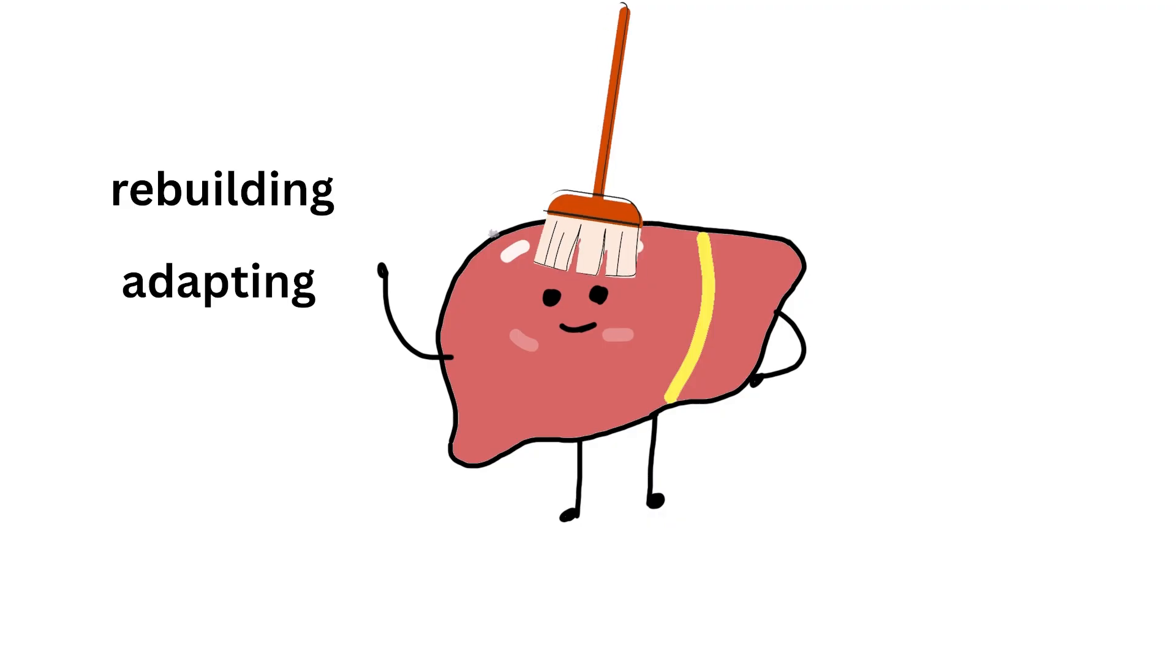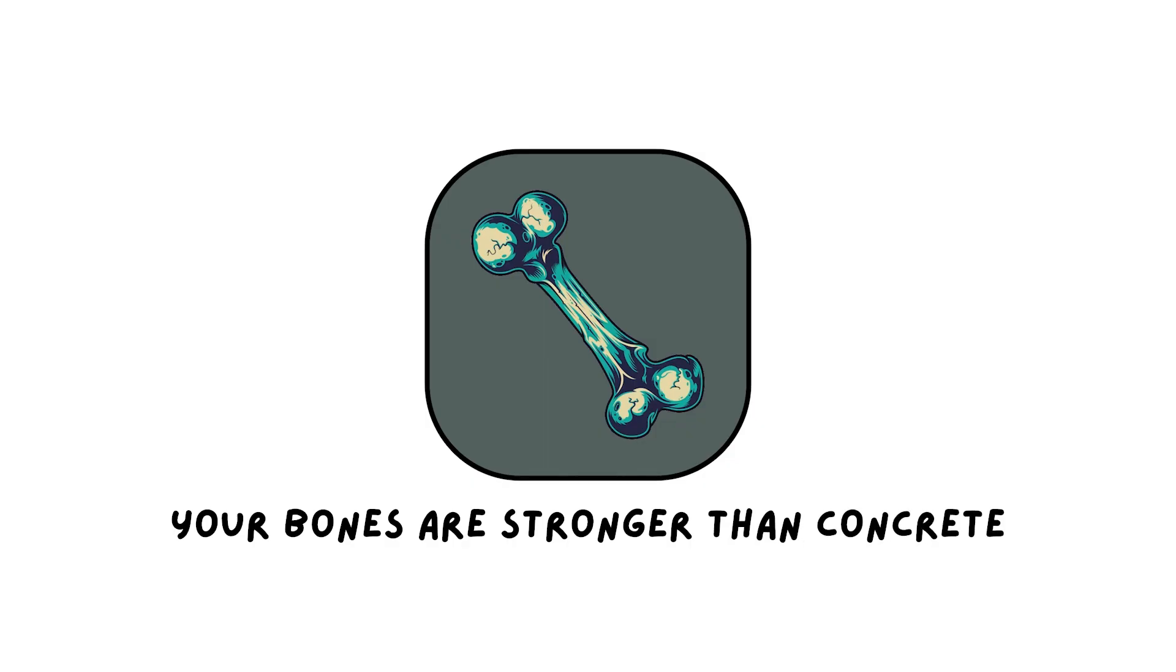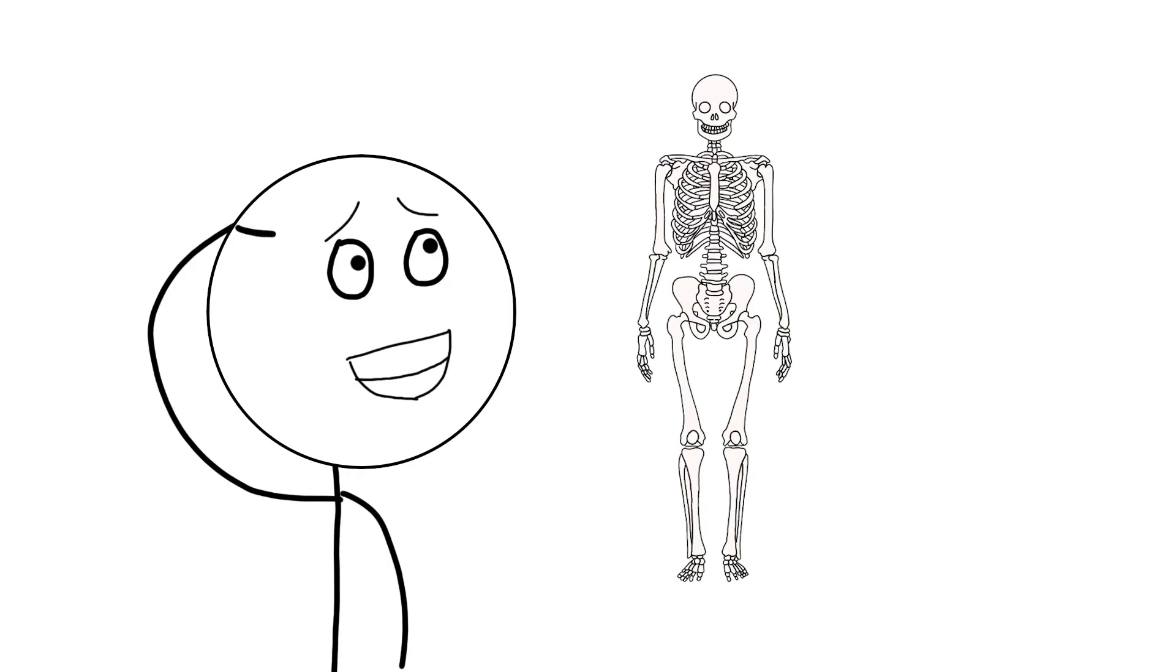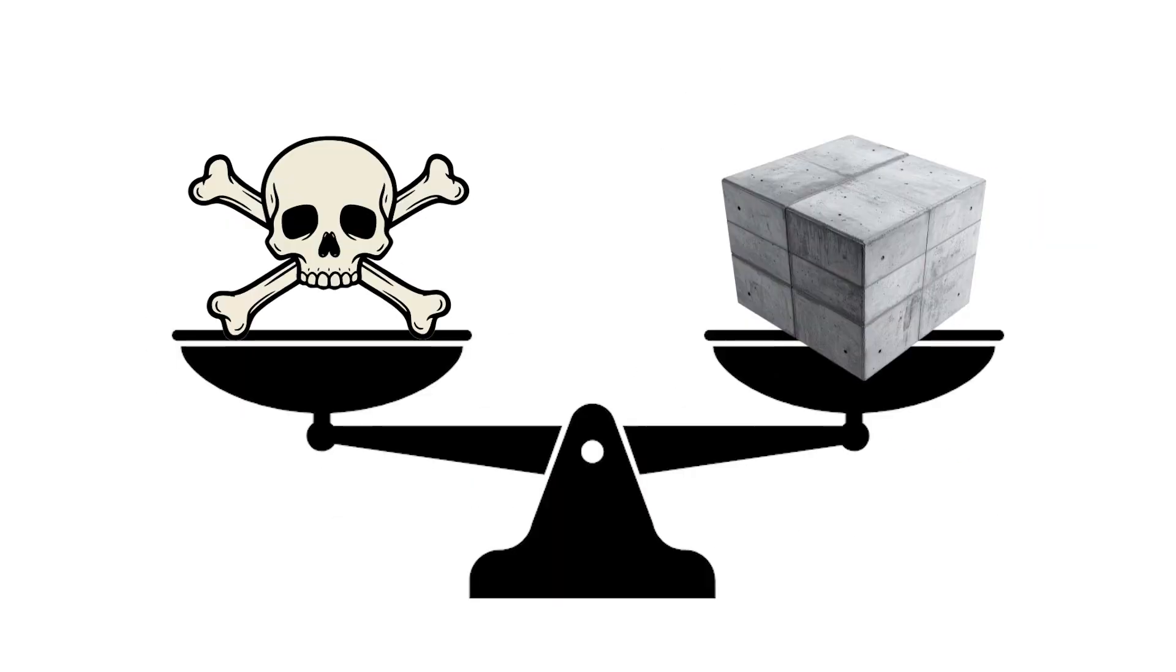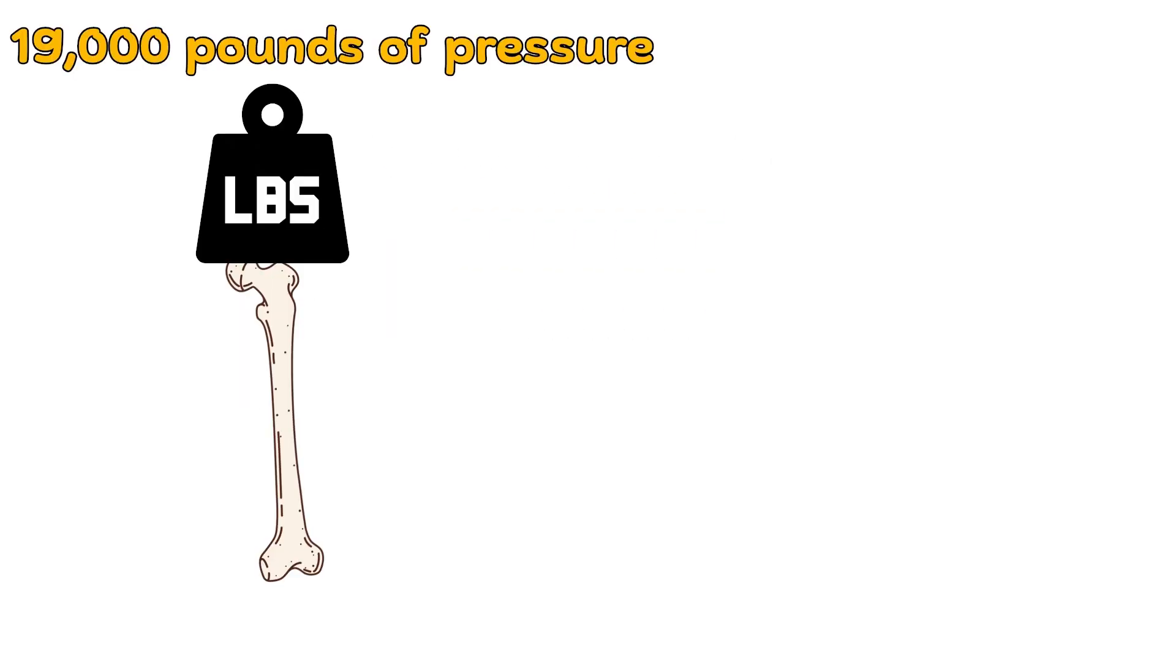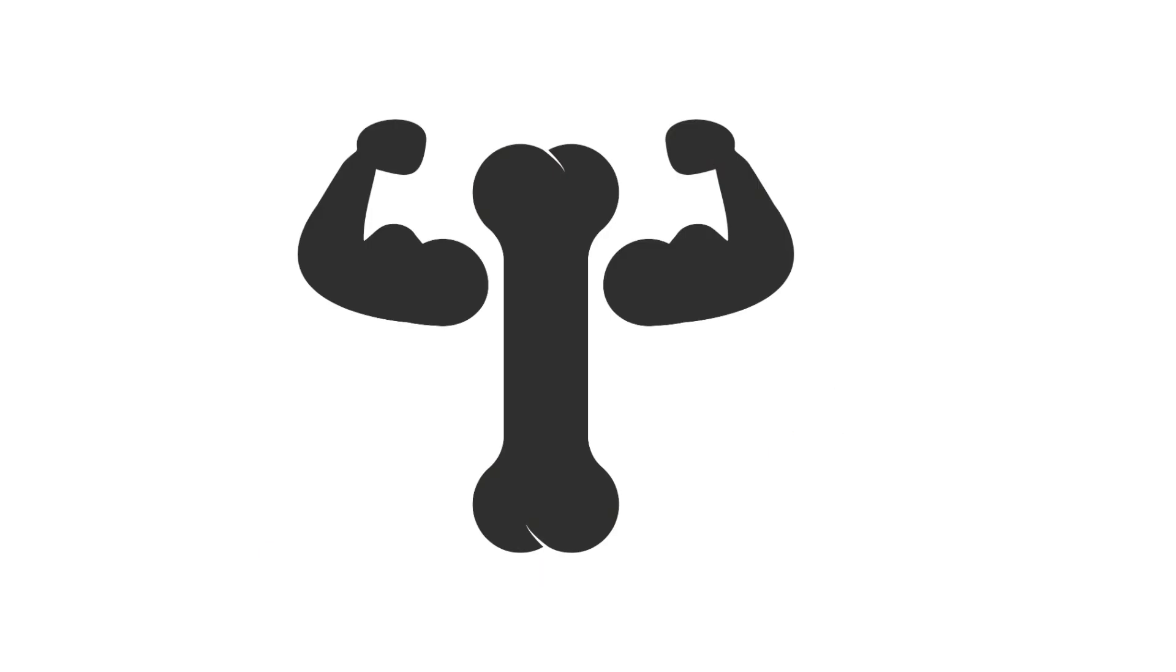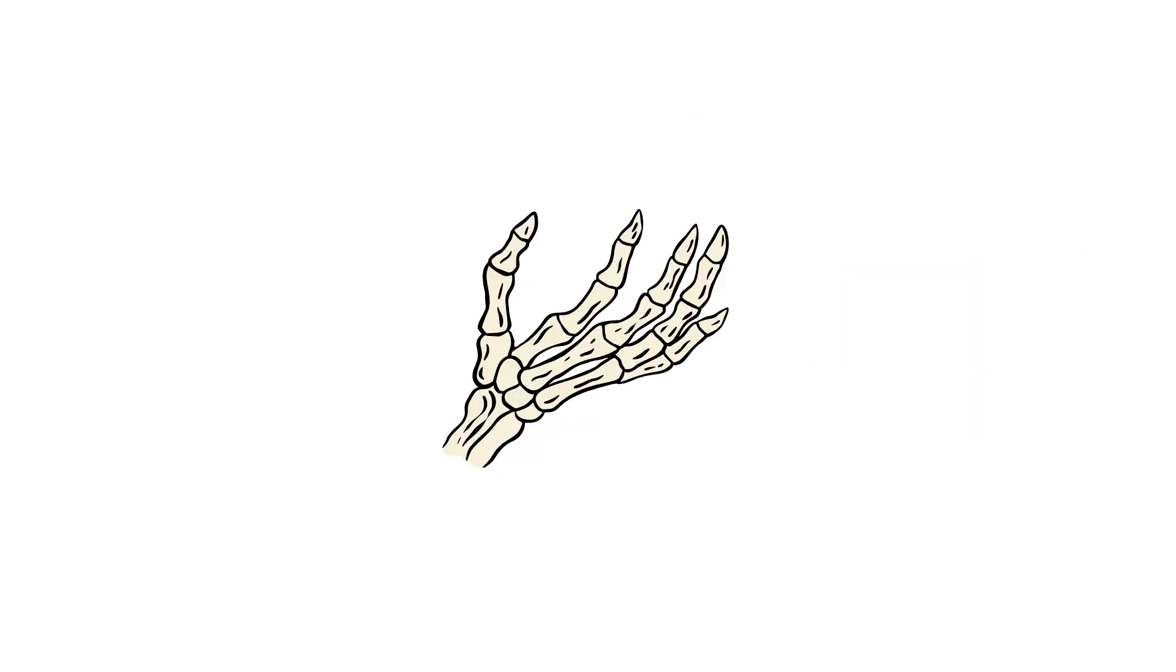Your bones are stronger than concrete. You might not think of your skeleton as a powerhouse, but ounce for ounce, bone is stronger than concrete. A cubic inch of bone can withstand roughly 19,000 pounds of pressure. That's the weight of five pickup trucks stacked on a single square inch of you. What makes it so powerful isn't just hardness, it's architecture. Bones are made of a composite of collagen for flexibility and hydroxyapatite crystals for strength. It's nature's perfect engineering blend of toughness and lightness.